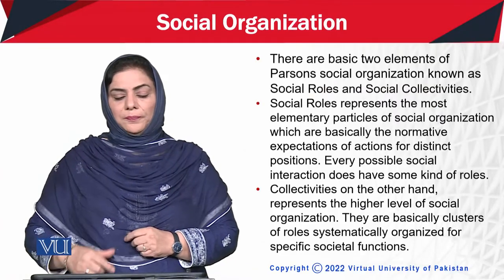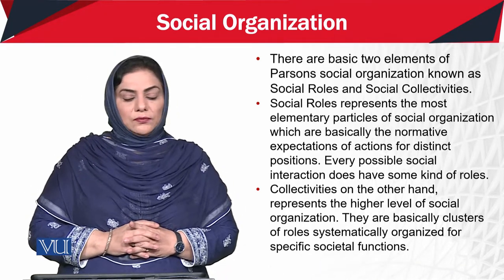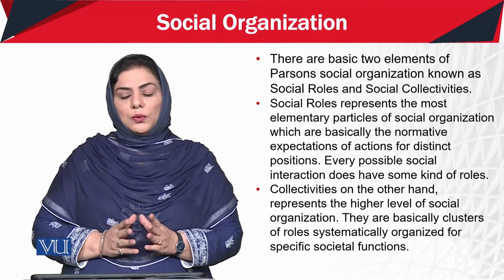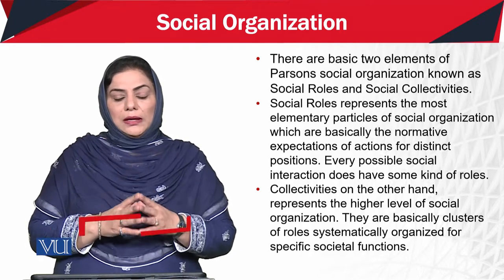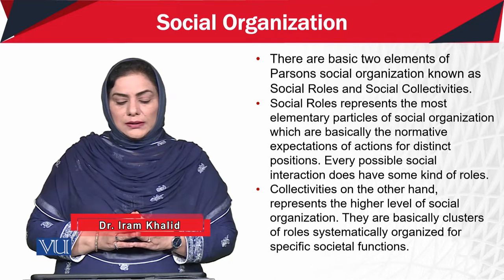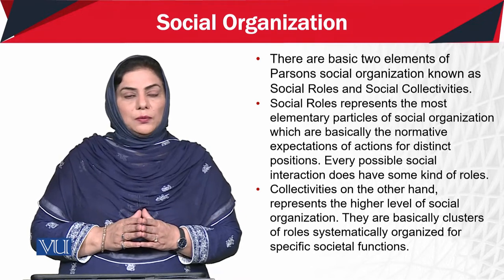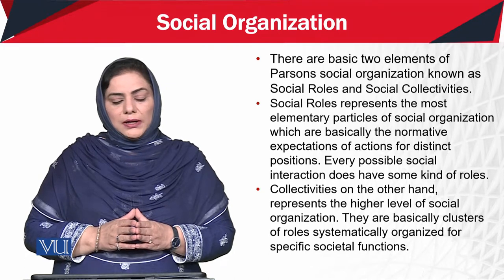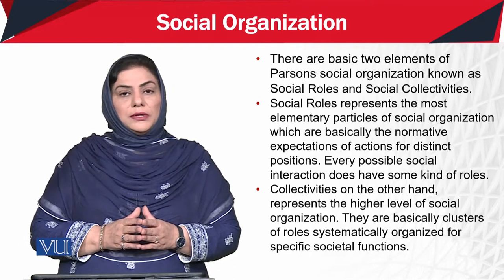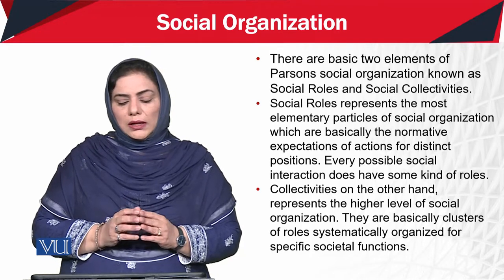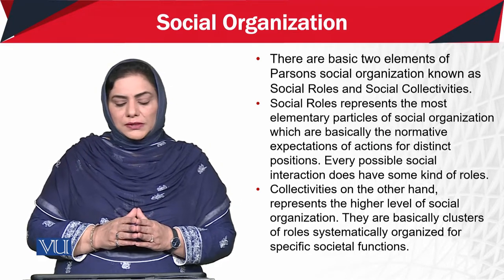Social organizations. According to Talcott Parsons, there are basically two elements of social organizations known as social roles and social collectivities. Social roles represent the most elementary particles of social organization — the normative expectations of actions for distinct positions — and every possible social interaction has some kind of roles. Collectivities, on the other hand, represent the higher level of social organization, and are clusters of roles systematically organized for specific societal structures.